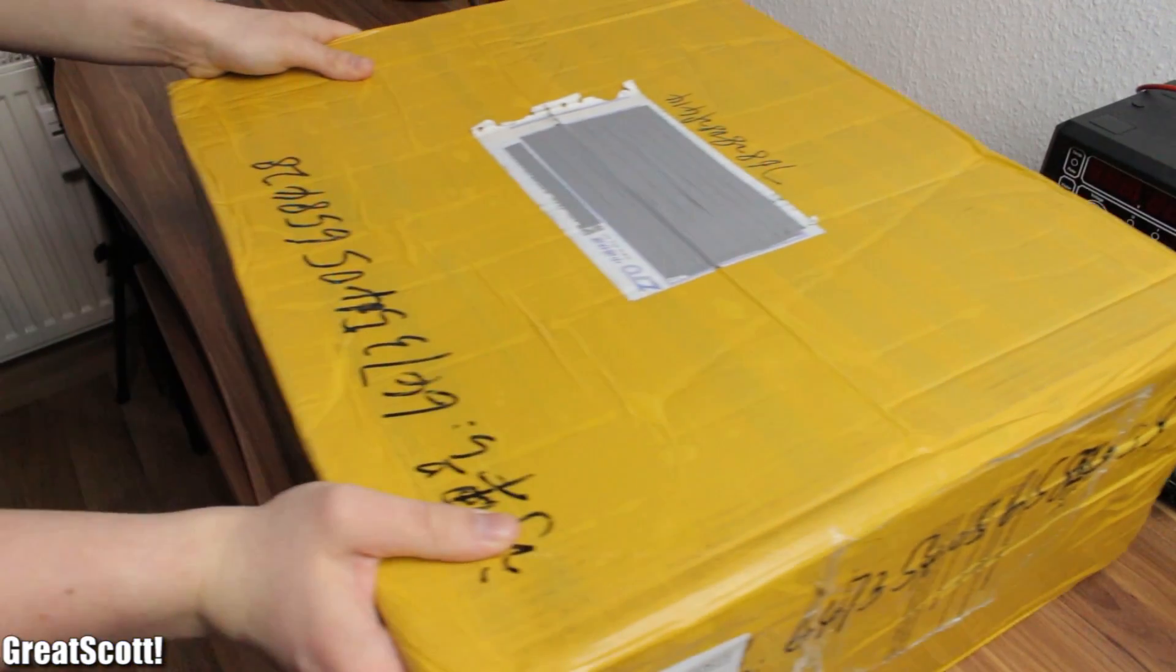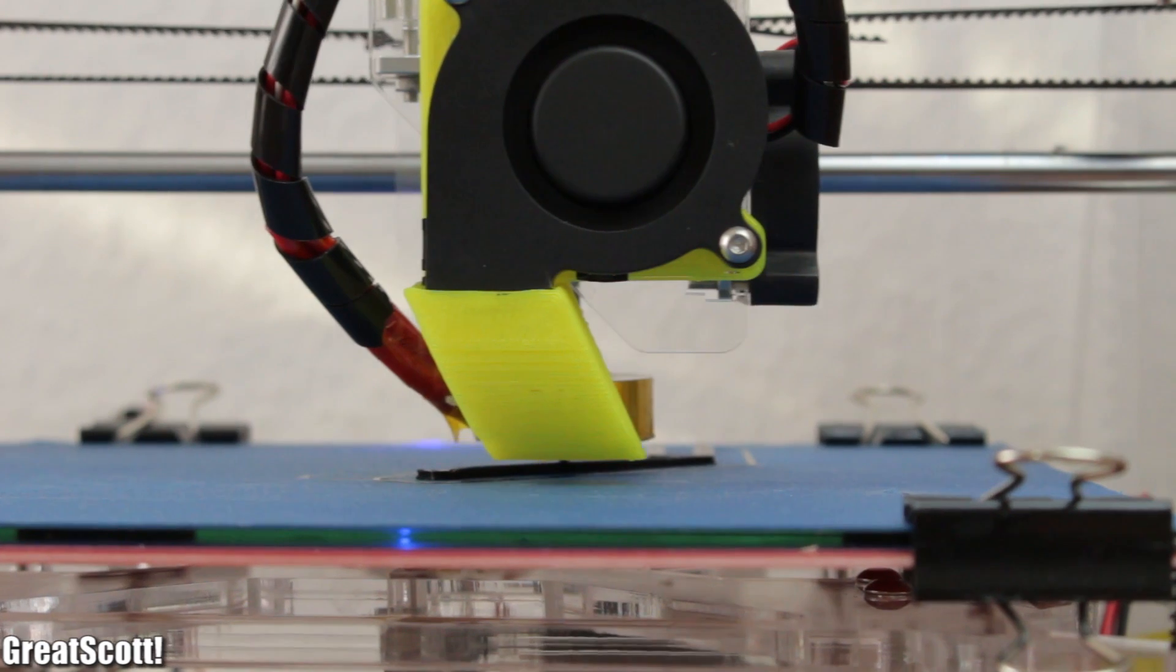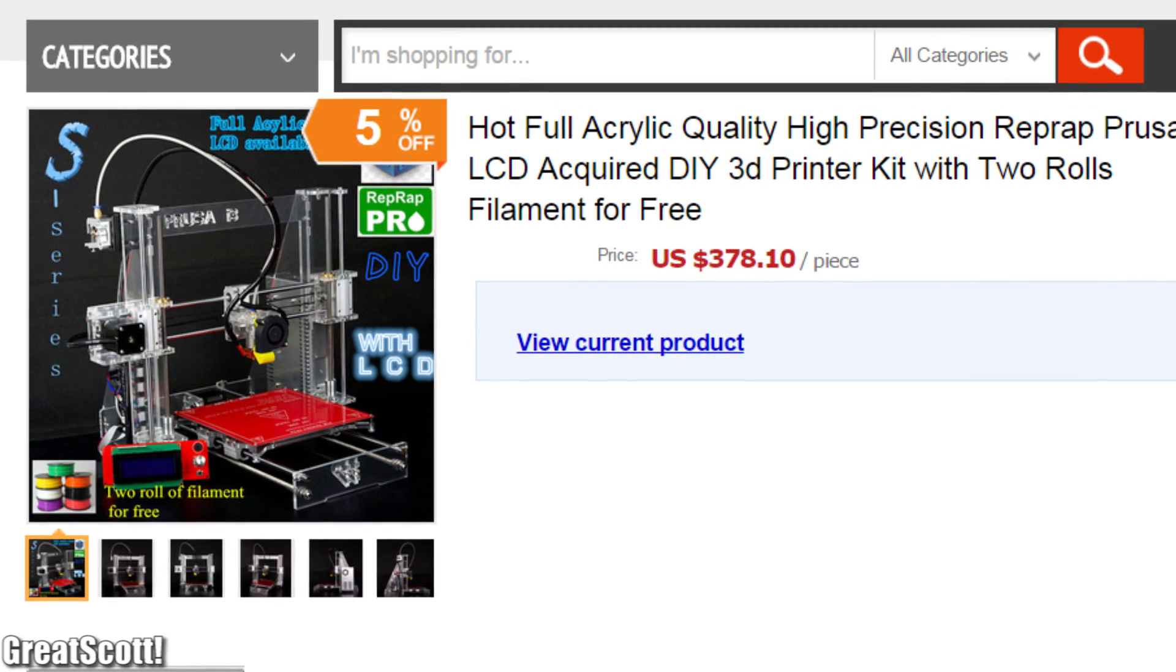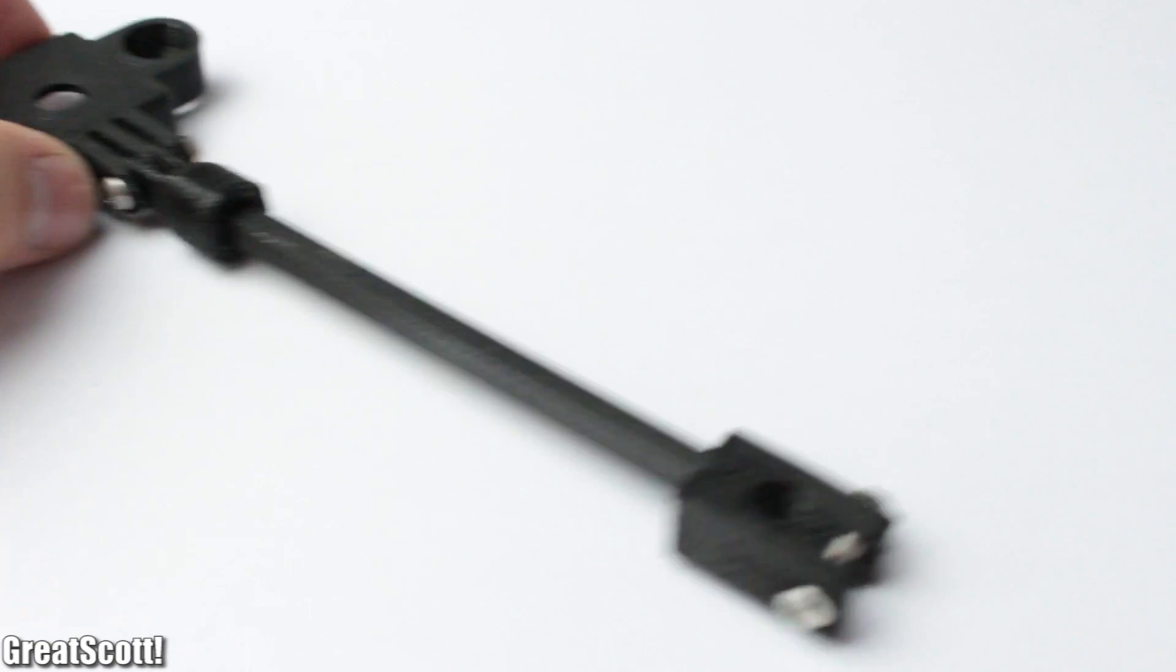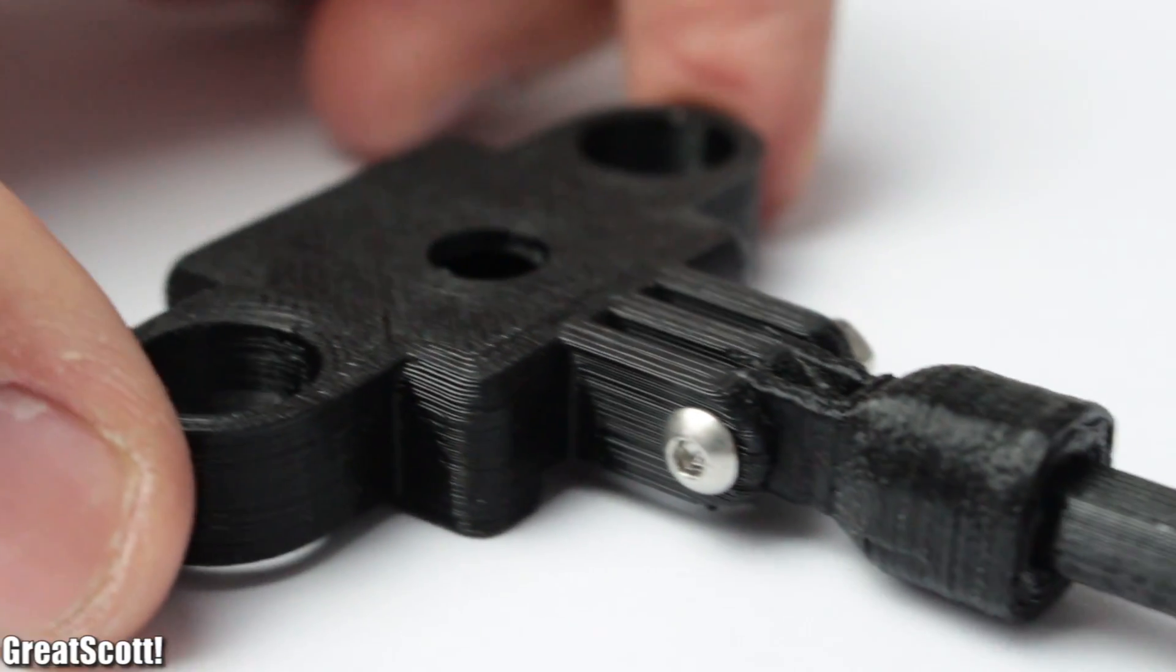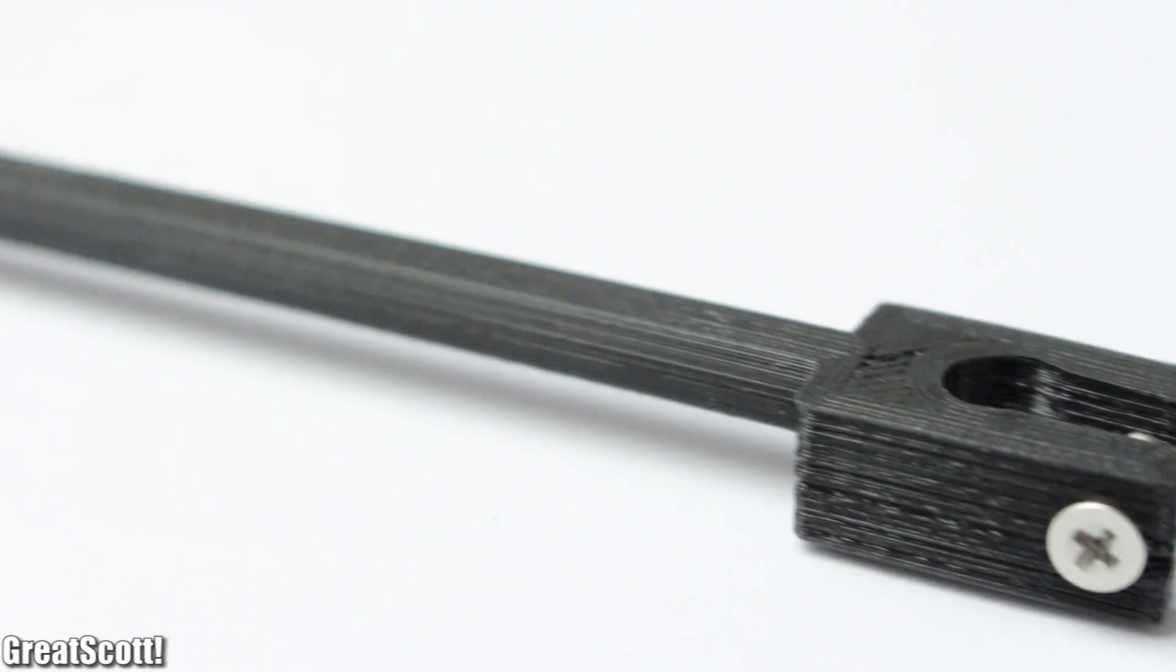About six months ago, I decided to buy myself a DIY 3D printer kit. This Prusa i3 kit cost me around 380 US dollars. And as you can see, my print quality reached a point where I can say it looks okay. Not good or perfect, but okay.